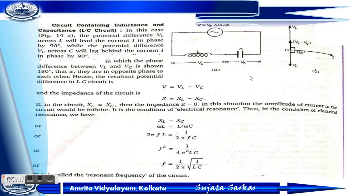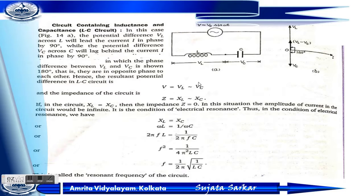Now, current I is phased by 90 degrees for both the inductor and capacitor. The phase difference between VC and VL is always 180 degrees. So in the LC circuit, the net potential difference is V equals VL minus VC, and the impedance is Z equals XL minus XC. When XL equals XC, Z equals zero.